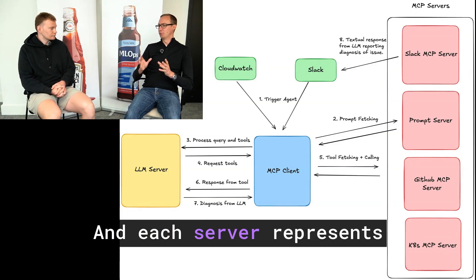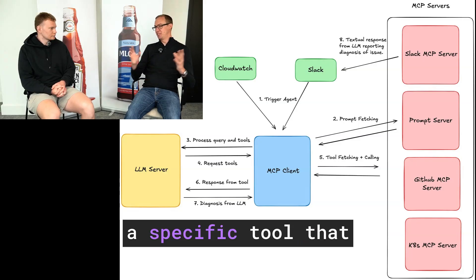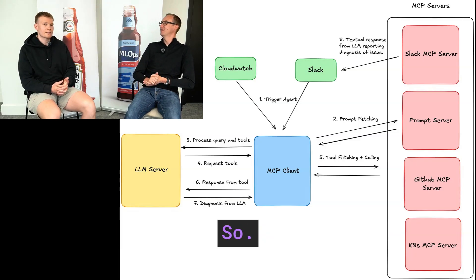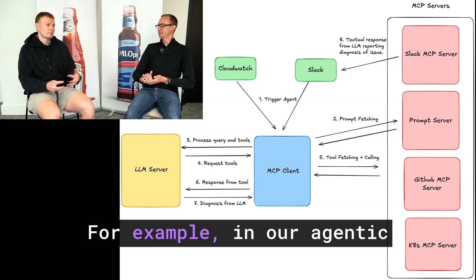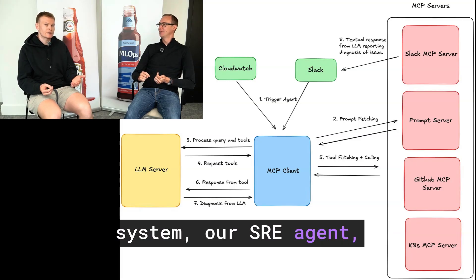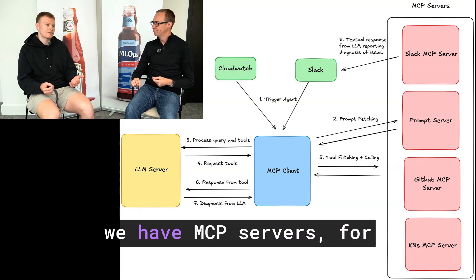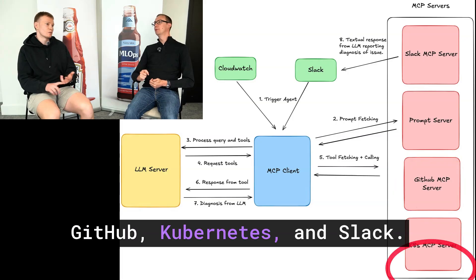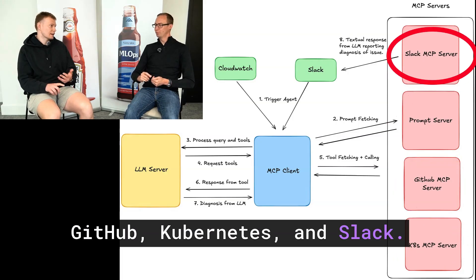Each server represents a specific tool that the agent has access to. For example, in our SRE agent, we have MCP servers for interacting with GitHub, Kubernetes, and Slack.